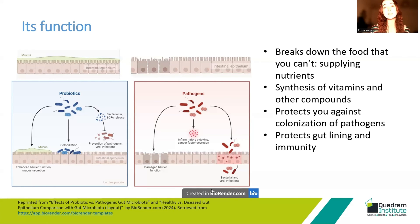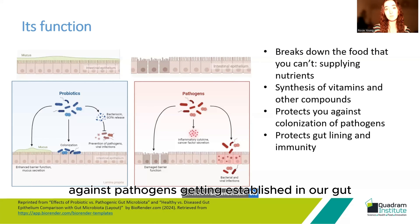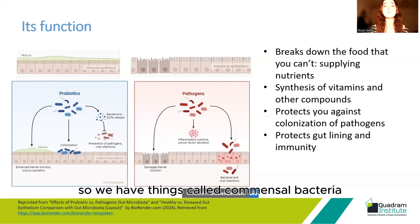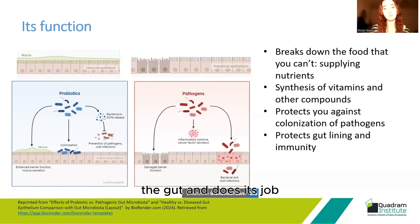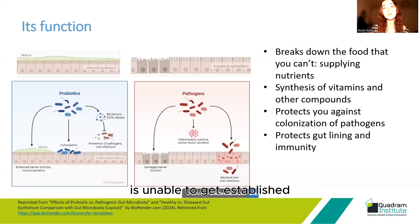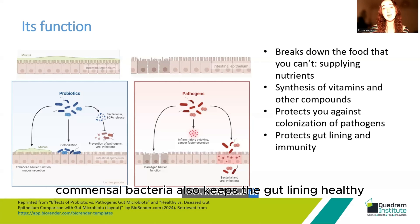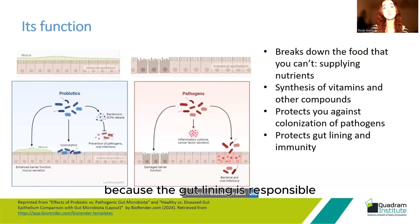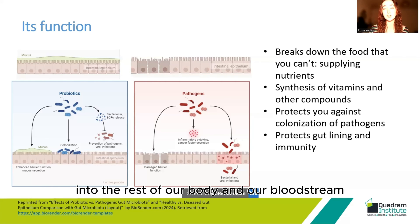They can protect us against pathogens getting established in our gut. We have things called commensal bacteria — the harmless bacteria that just sits in the gut, does its job, and helps keep us healthy. By taking up space on the gut lining, this means that pathogenic bacteria is unable to get established. Commensal bacteria also keeps the gut lining healthy, which is super important because the gut lining is responsible for controlling what gets in from our gut into the rest of our body and our bloodstream.